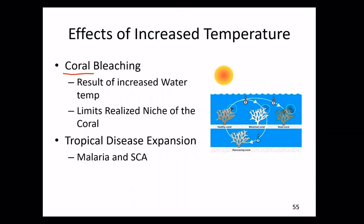Another effect of more carbon dioxide in the atmosphere is acidification of the ocean — more CO₂ dissolved in the water reduces the pH, which also affects coral growth. This means the realized niche of corals is being reduced: as we increase temperature, the areas available for coral to grow are reduced, and the fundamental niche can no longer be maintained.